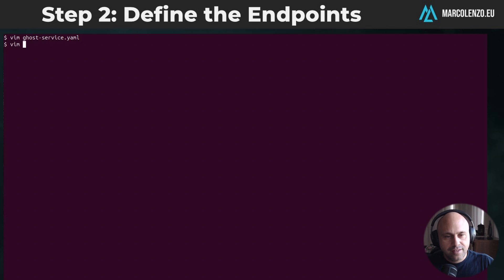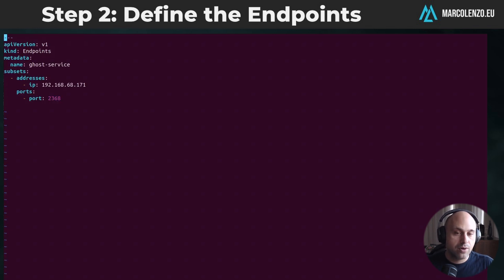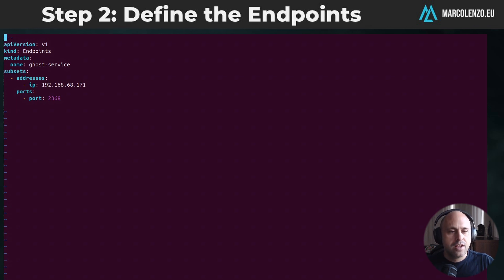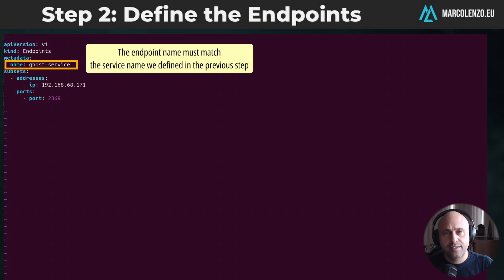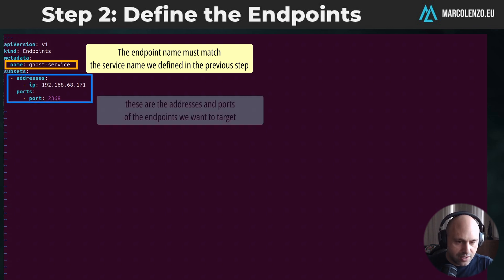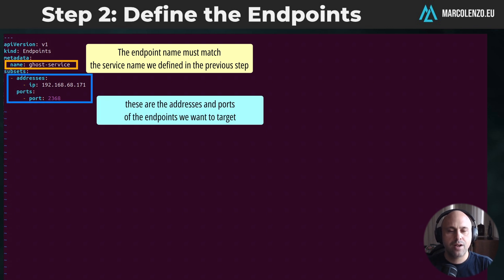The next step is setting up an endpoint — or as we said, an endpoint slice; I prefer the former because it's simpler. The most important part in this step is making sure that the endpoint name matches the service name. Then we define the target address and port of the application deployed outside the Kubernetes cluster.